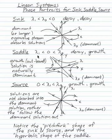A saddle, where one eigenvalue is negative and the other is positive, where I have decay on one stream and growth on another. Then the outbound solution is naturally dominant. I have solutions that drift from the incoming solution to the outgoing solution. This portrait looks like a saddle surface, like a hyperbolic paraboloid from calculus.